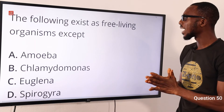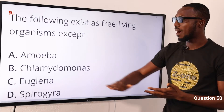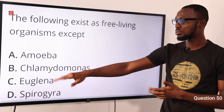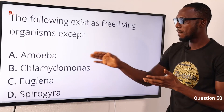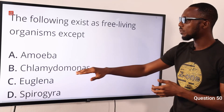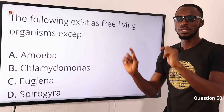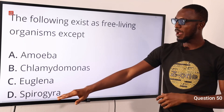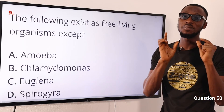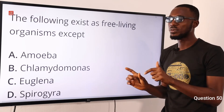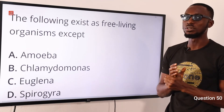Question 50. The following exist as free-living organisms except which one? Amoeba and Euglena belong to the phylum Protozoa, kingdom Protista — they are unicellular. Chlamydomonas is also a unicellular organism with a cup-shaped chloroplast. Spirogyra is a simple multicellular organism that exists as a filament, while Volvox exists as a colony. So the correct option is option D — Spirogyra is the exception here.